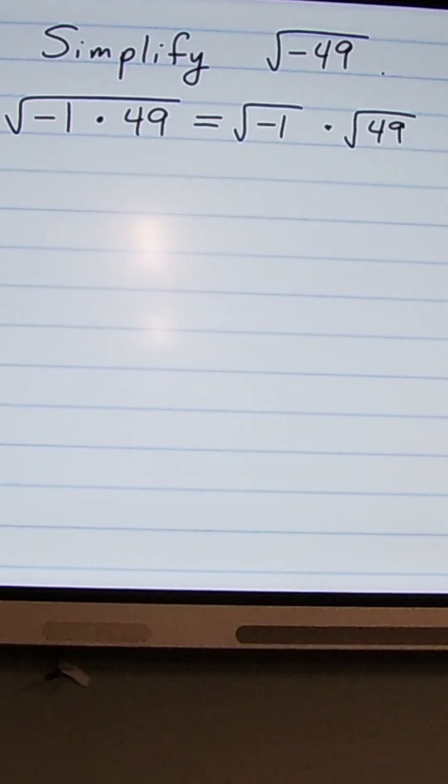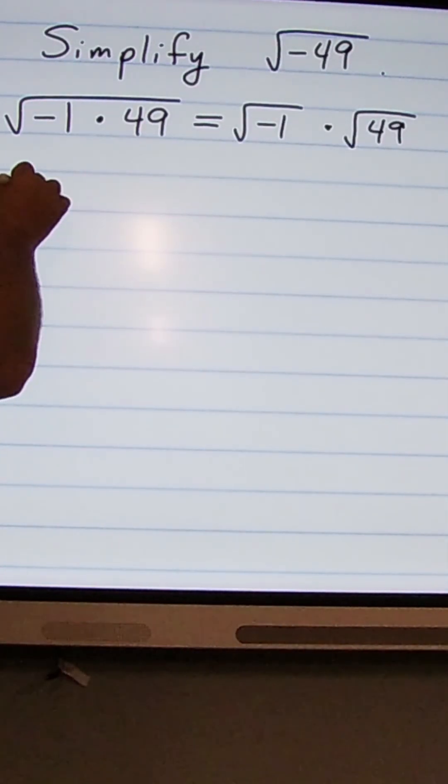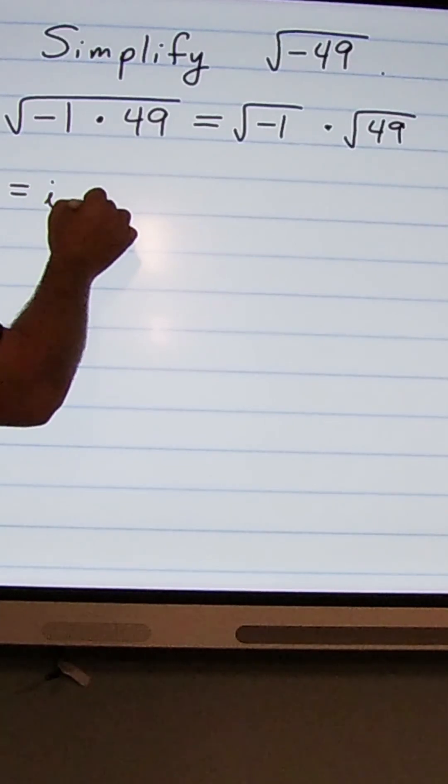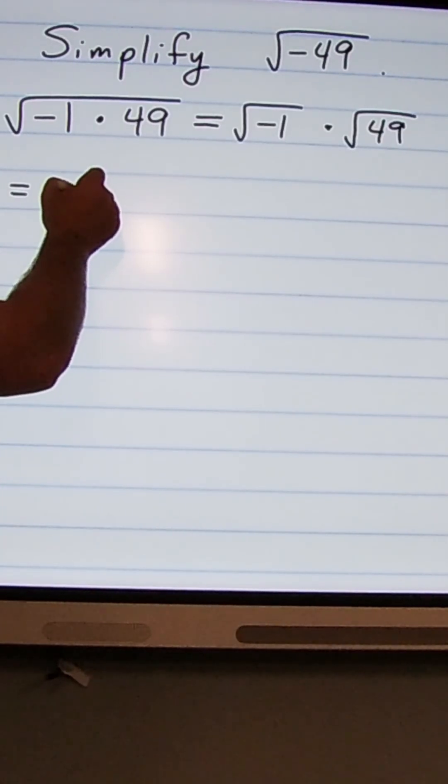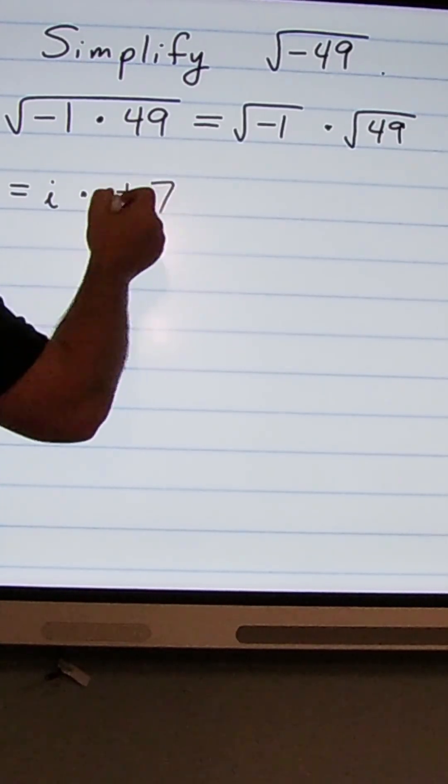Now the square root of negative 1 is i. And the square root of 49, you can have a negative 7 times another negative 7 equal positive 49. You could also have a positive 7 times a positive 7 equal 49. So I'm going to be multiplying this i by plus or minus 7 here.